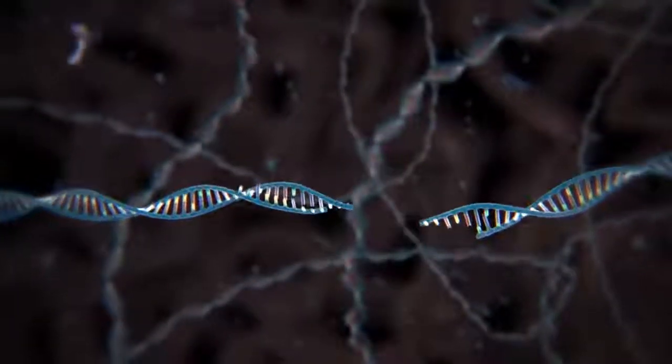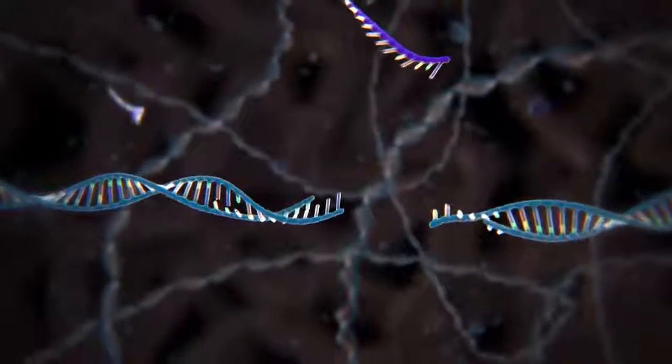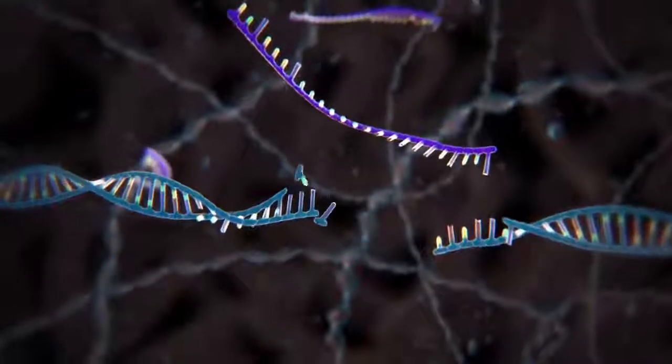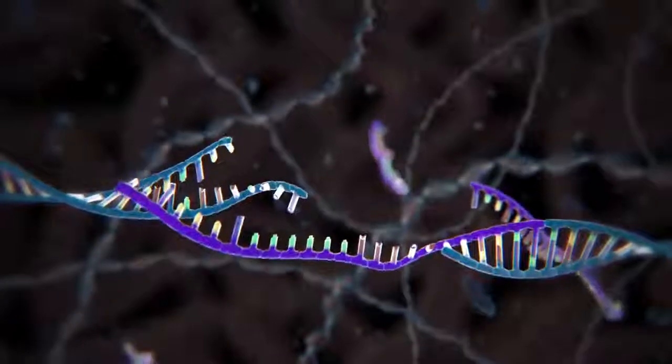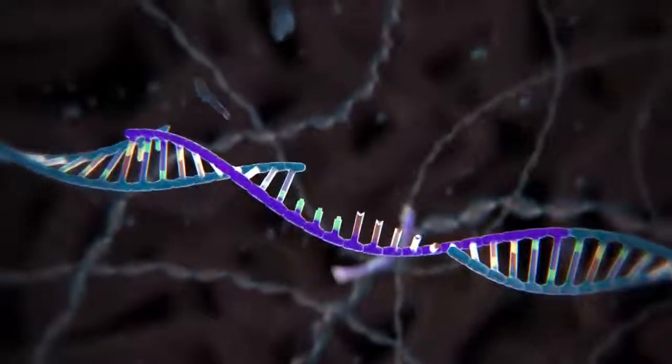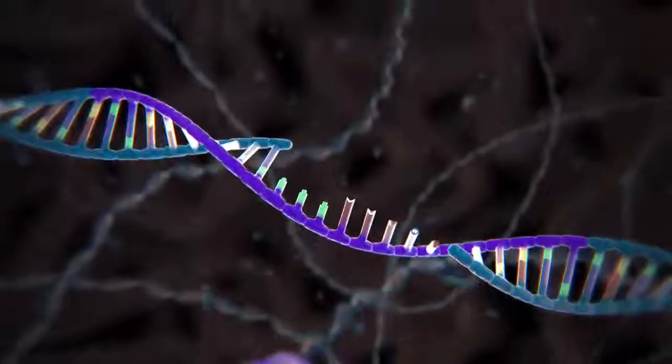This can be done by adding another piece of DNA that carries the desired sequence. Once the CRISPR system has made a cut, this DNA template can pair up with the cut ends, recombining and replacing the original sequence with the new version.